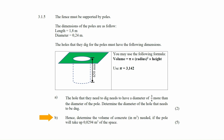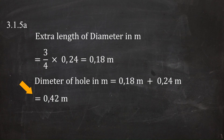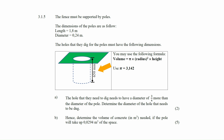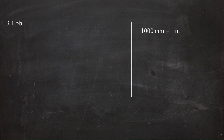In question 3.1.5b, determine the volume of concrete needed if the pole takes up 0.0294 cubic meters of space. Using V = π × r² × h, the radius of the hole equals half the diameter from 3.1.5a. The depth of 650 millimeters must be converted to meters: 650 ÷ 1000 = 0.65 meters.